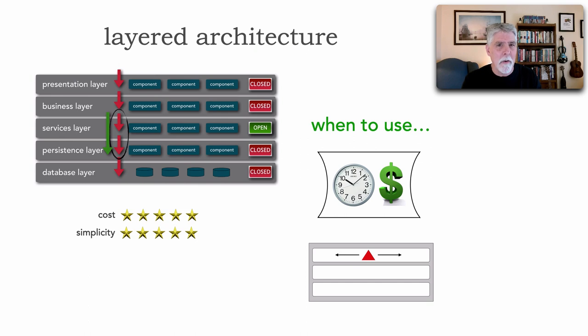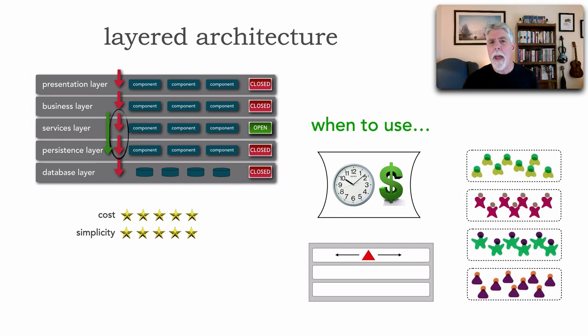These are great use cases for the layered architecture because that change is isolated to a particular technical category, a particular layer, so it doesn't impact other parts of the architecture. Also, if you happen to have a team that is divided by technical areas—a team that only focuses on UI, a team that only focuses on business rules, a team that only focuses on shared functionality, maybe a database team—this matches this architecture fairly well. You can see there still are some use cases for the layered architecture.